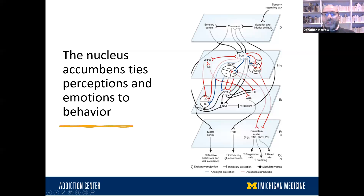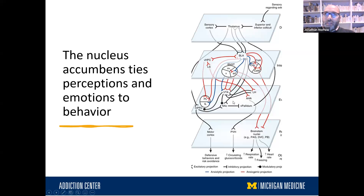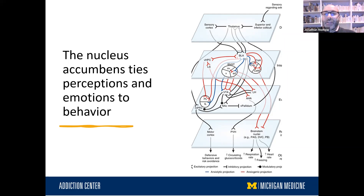That perception gets passed to the second level, where it attaches emotions and memories — the last time I saw that, I was at a party, with my friends, having a good time. Then the next level is where the nucleus accumbens comes in — that's where you're making a decision about what to do: am I going to drink it or not? Whatever decision you make gets passed on to the final level, where it goes to the motor cortex and other areas where you're preparing for whatever action you decided to take.